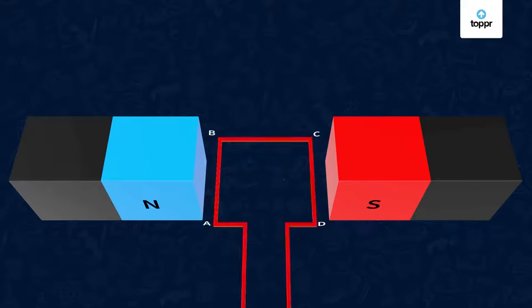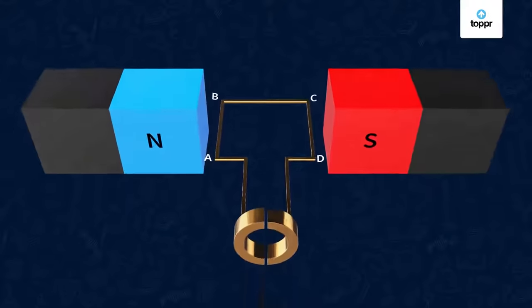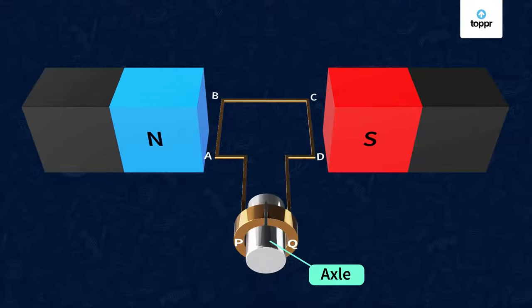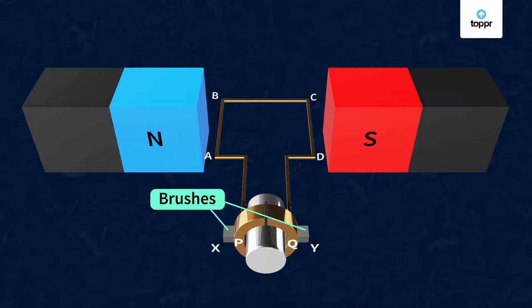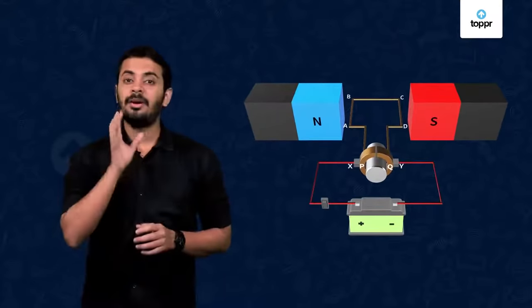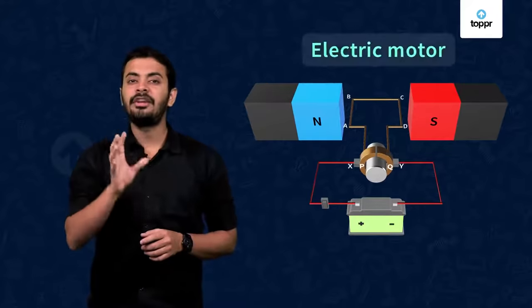The two ends of this rectangular coil are connected to the two halves of a split ring, labeled as P and Q. The inner sides of these halves are insulated and attached to the axle. The external conducting edges of P and Q touch the two conducting stationary brushes X and Y. And these stationary brushes are connected to a source called a battery. So, this is how the complete setup of a simple electric motor looks.